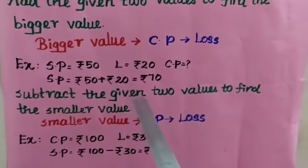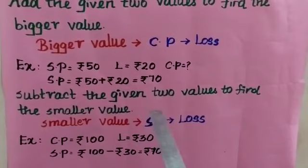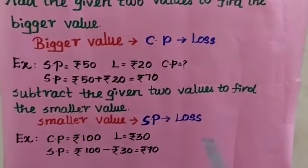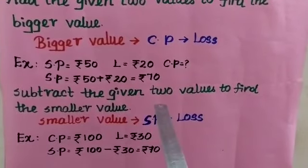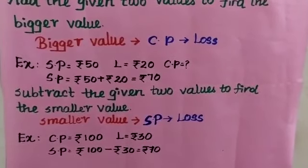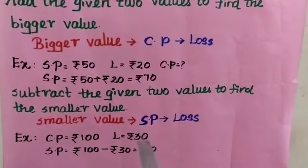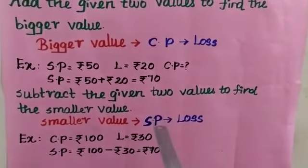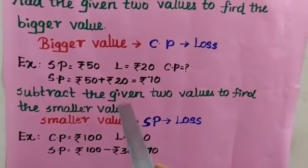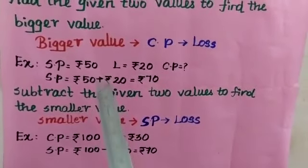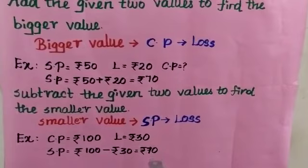Subtract the given two values to find the smaller value. The smaller value is the selling price in loss. So whenever we are finding the selling price in loss, we should do the subtraction. For example, the cost price is Rs. 100 and the loss is Rs. 30. We are finding the selling price. Selling price is the smaller value, so we should do the subtraction. When we subtract Rs. 30 from Rs. 100, we will get the answer as Rs. 70.